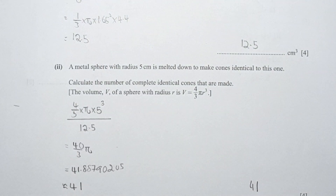For part 2, a metal sphere with radius 5 cm is melted down to make cones identical to this one. So (4/3) × π × 5³ divided by 12.5 gives approximately 41.888 identical cones. However, you cannot make 0.888 of a cone, so I round it down and the final result is 41.